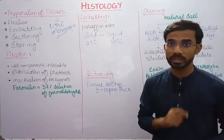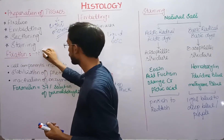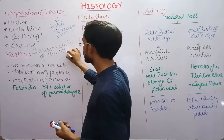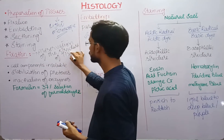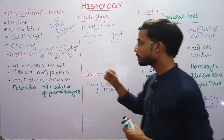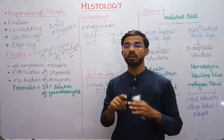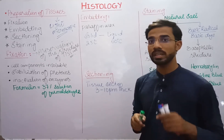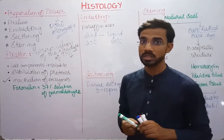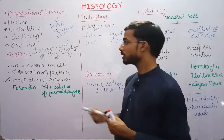The first step is fixation — how and why do we fix tissues? Fixation is basically for the preservation of the structure of tissues. We preserve the structure because a lot of enzymes are present in the cell, and when present they can autolyze the cell. So we have to inactivate the enzymes which are present in the cell — this is the inactivation of enzymes, because enzymes can cause autolysis.